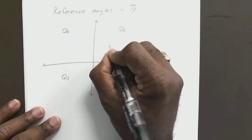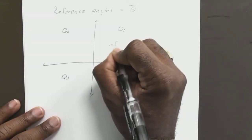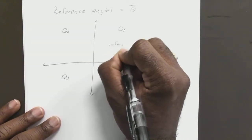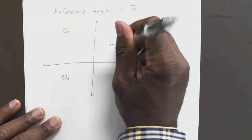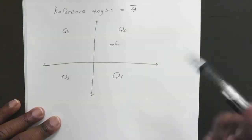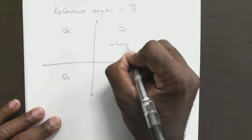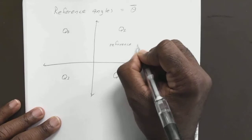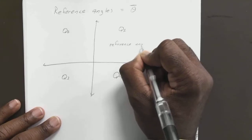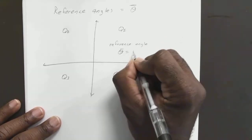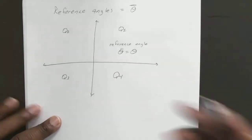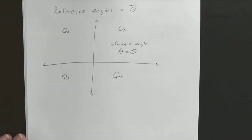Now in quadrant one, our reference angle just equals our regular angle. We don't have to change anything — it's right in quadrant one.